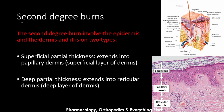A second degree burn is an injury involving the epidermis and the dermis — those are skin layers. In the skin we have three layers: the epidermis, the dermis, and the subcutaneous layer. During the second degree burn, two of those layers are burned: the epidermis and the dermis. We have two types: the superficial partial thickness and the deep partial thickness. Second degree burns are also called partial thickness burns.